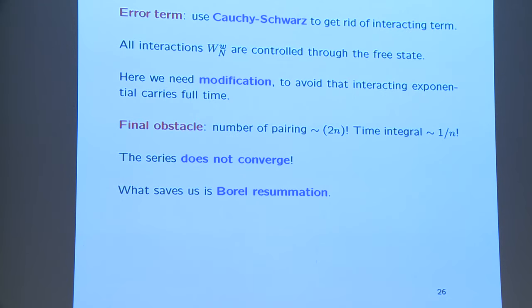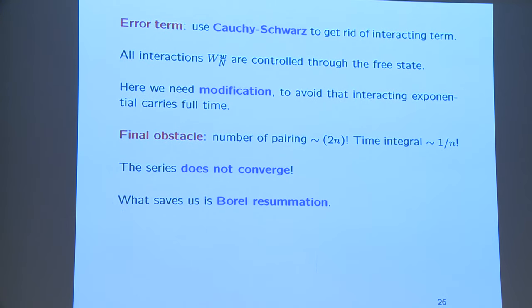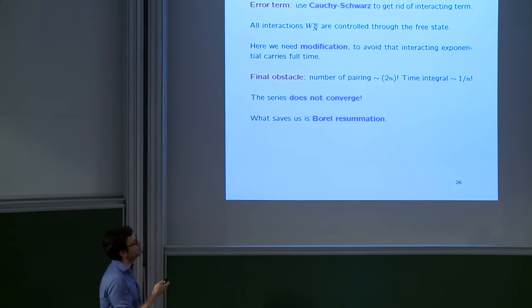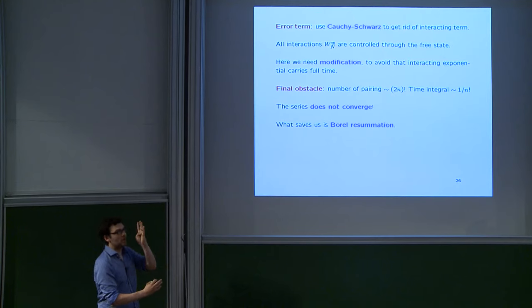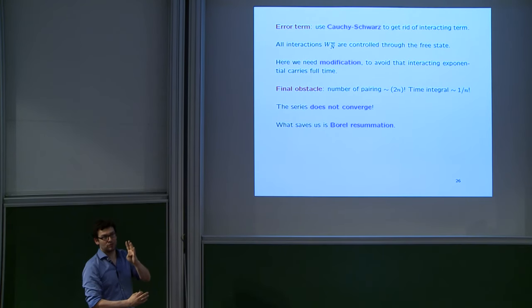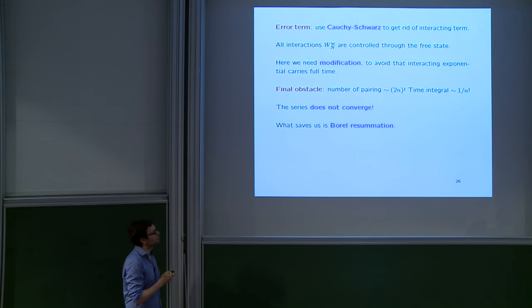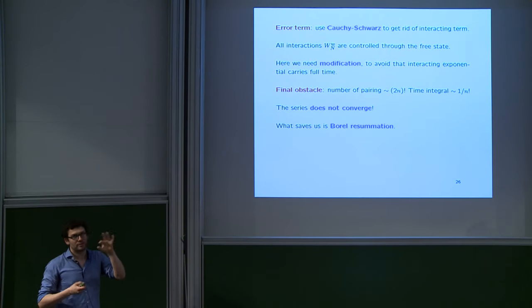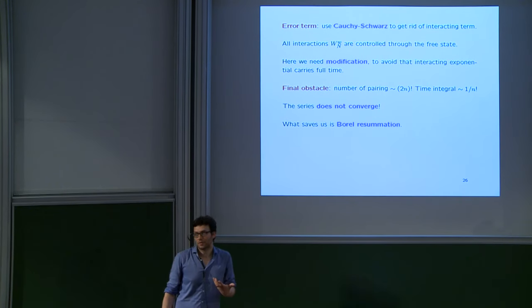The proof is based on a perturbation expansion — a Duhamel expansion in the interaction — for both the many-body state and the Hartree measure. The effect of the modification is that integrals in the Duhamel series run from η to 1 − η instead of 0 to 1. Using Wick's theorem for the free state, expectations of products of creation and annihilation operators reduce to sums over pairings. Crucially, Wick ordering excludes self-pairings at the same point x, which would produce traces of H⁻¹ diverging in 2 and 3 dimensions. One proves each pairing term converges as N → ∞ to the corresponding term in the Hartree expansion, establishing the result.